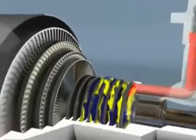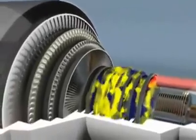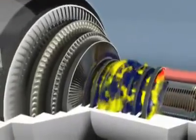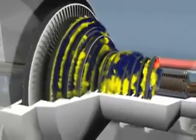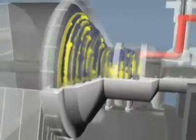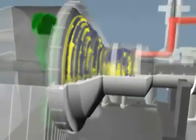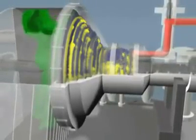As the steam flows through each stage of blading, it expands as it transfers its energy to the rotor. So each stage of blading is larger to capture as much energy as possible. After the steam passes through the turbine steam path, it's exhausted into a condenser, turned back into condensate and returned to the boiler to be made into steam once again.